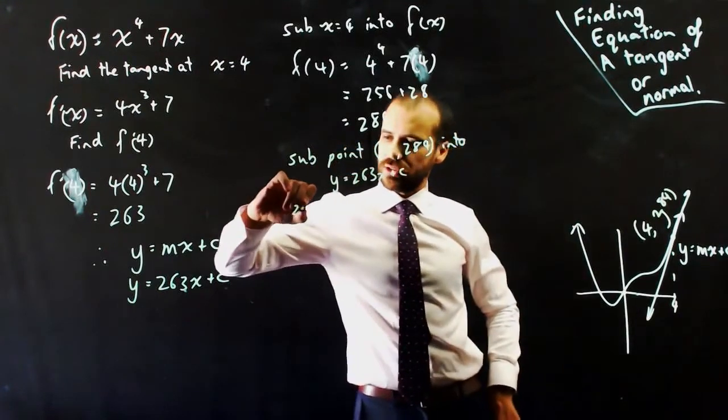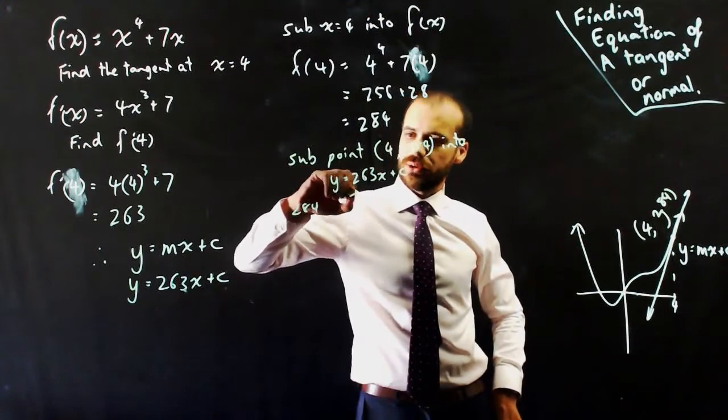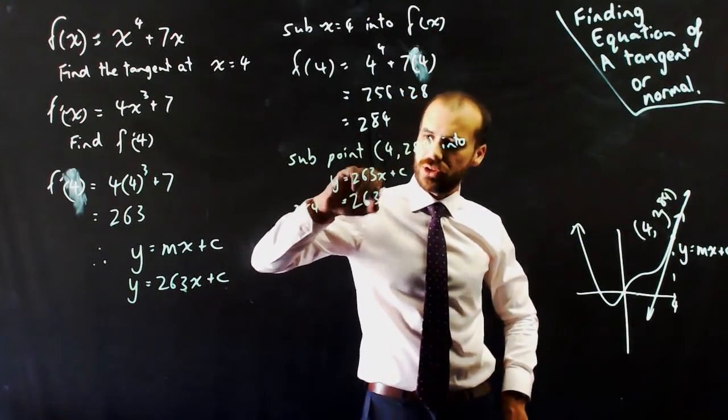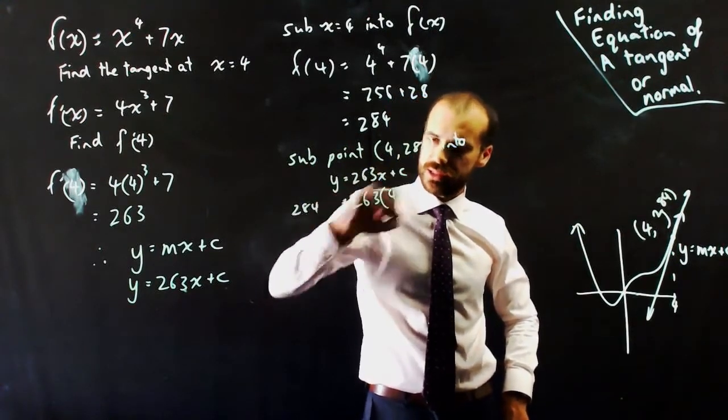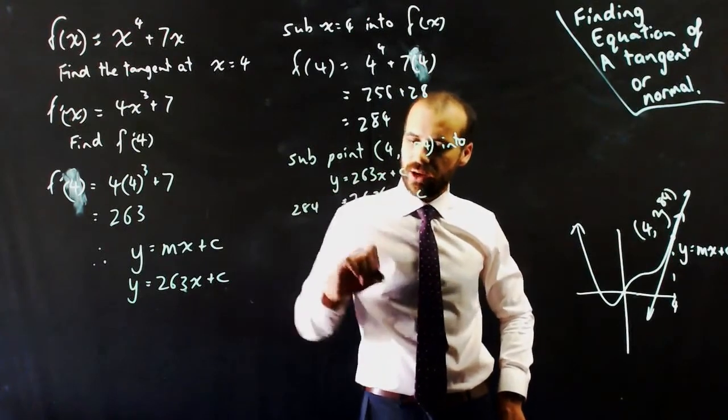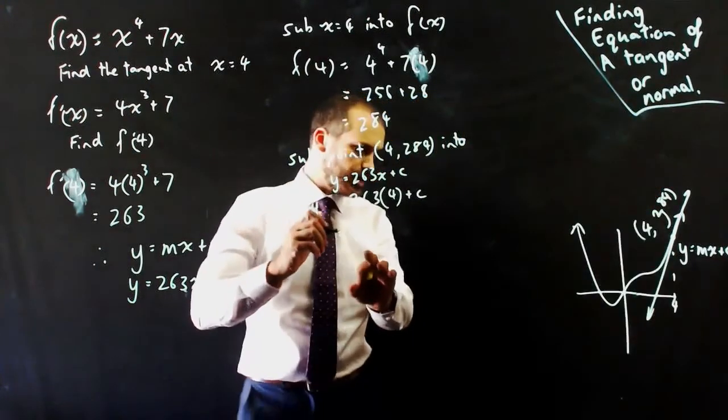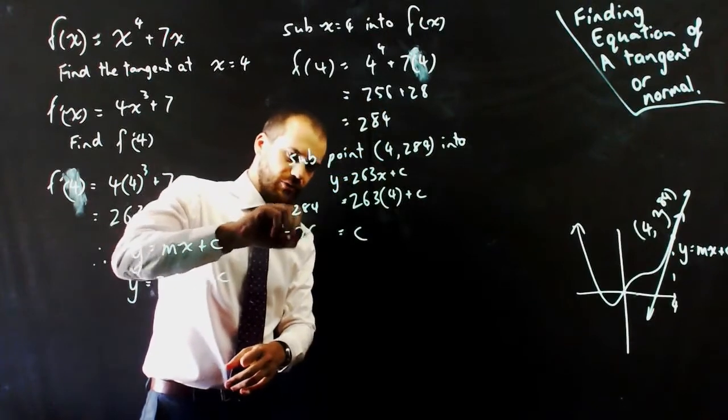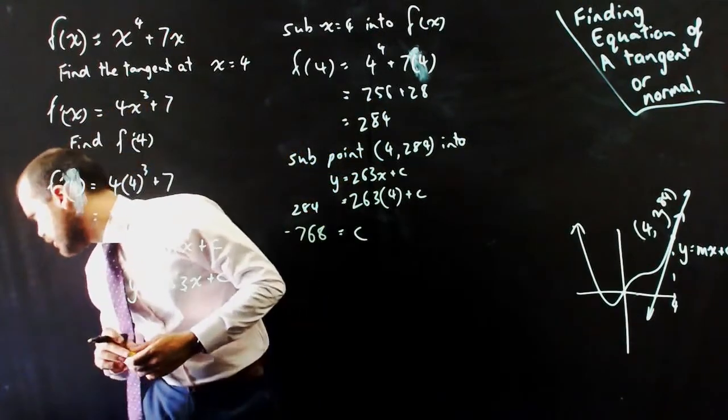So when I do that, I get 284 = 263(4) + c. And I can solve that for c. So c = -768, I believe.